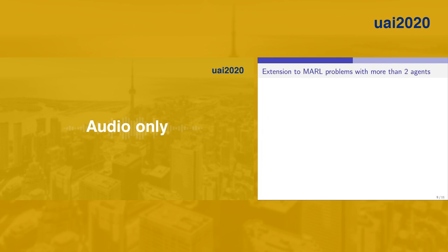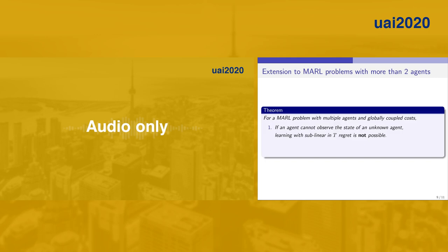So far in this talk, we have talked about the multi-agent RL problem with two agents. I would like to talk about the extension of our result to the multi-agent RL problem with more than two agents. For a multi-agent RL problem with multiple agents and globally coupled cost, we can show that if an agent cannot observe the state of an unknown agent, learning with sublinear regret is not possible.